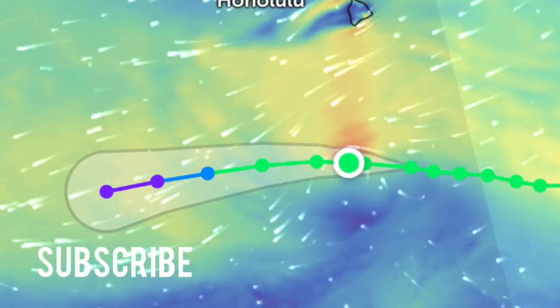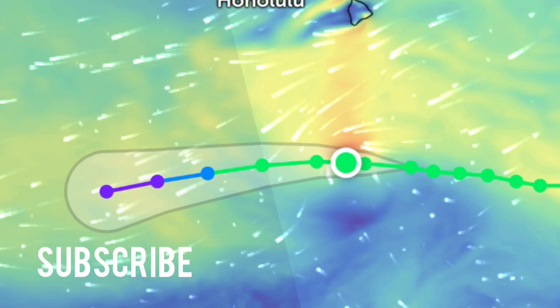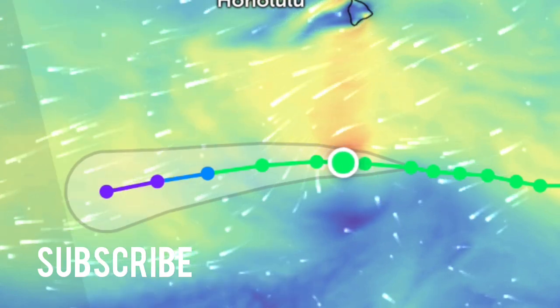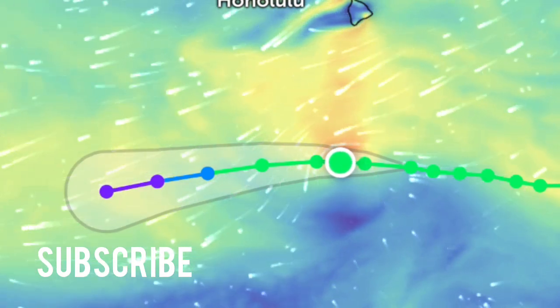A blend of the inputs supports keeping the official intensity at 45 miles per hour, 40 knots, for this advisory, though that may be generous.